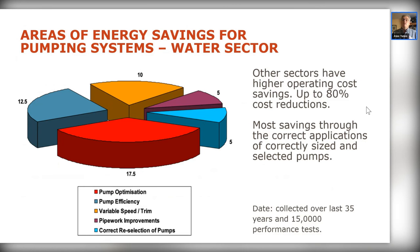On optimization, general savings are in the region of 17.5 to 20% — more with variable speed, slightly less with fixed speed. On pump condition: from around 2,500 to 3,000 pumps personally tested and over 15,000 tests reviewed, the average shortfall in pump performance is 12 to 14% — 12% for water applications, 14 to 15% for wastewater.